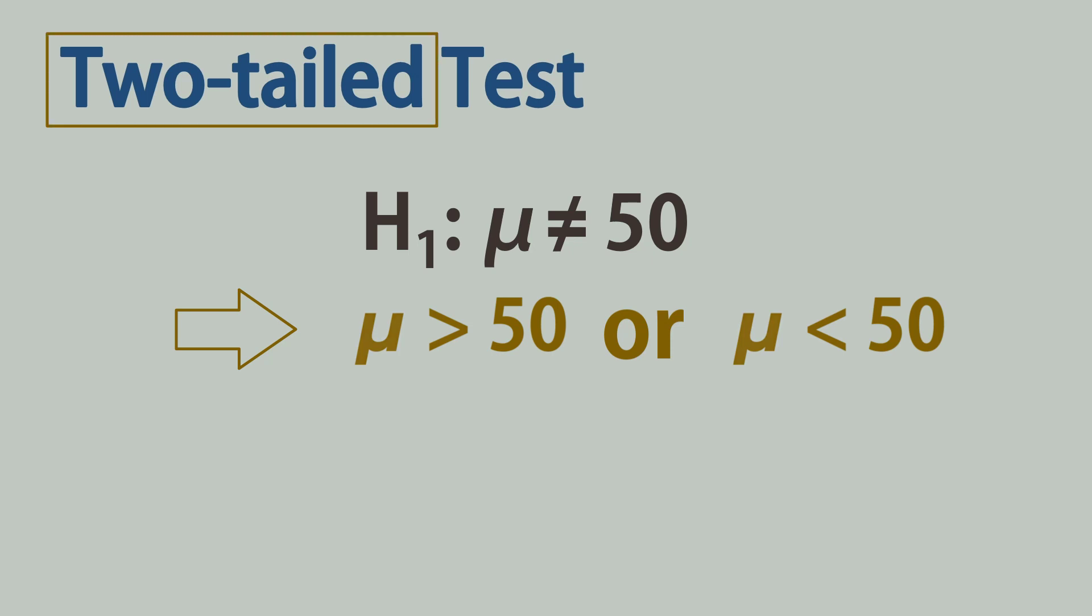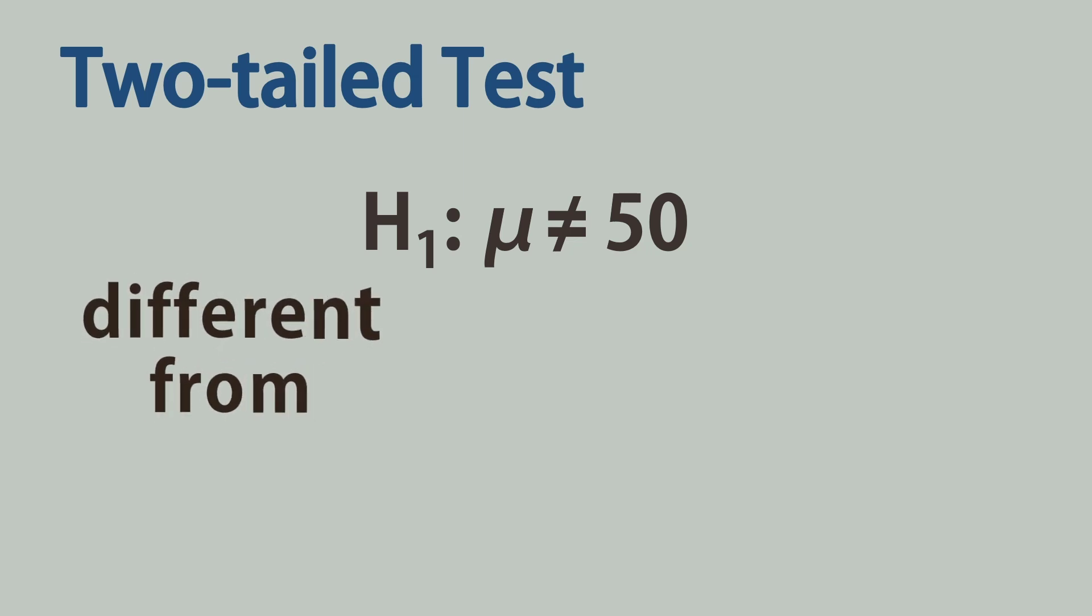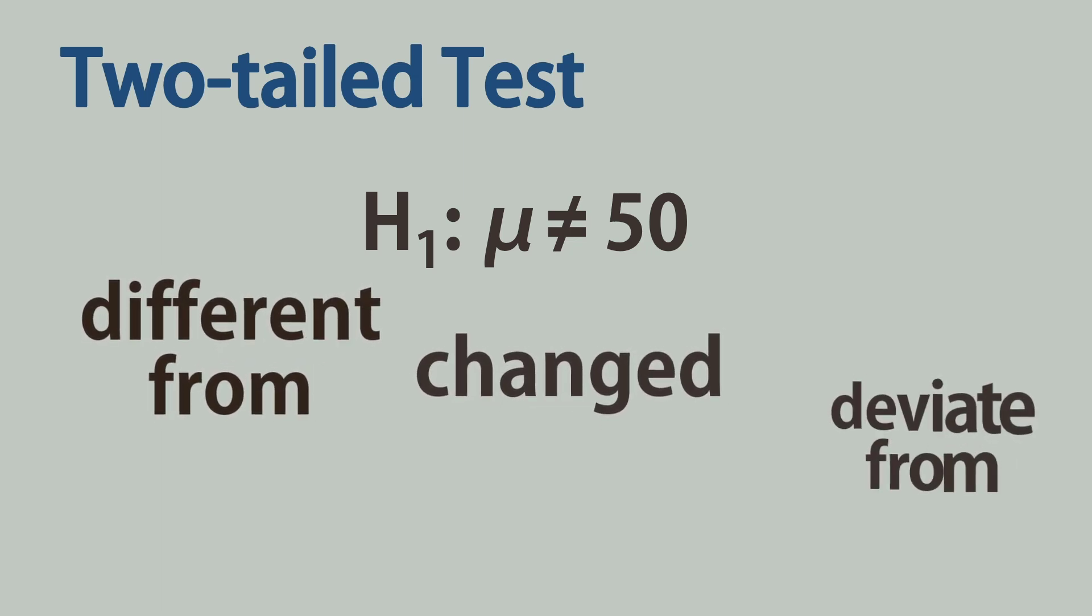Other keywords or phrases for the alternative hypothesis in two-tailed tests include different from, change, deviate from, inconsistent with, and so on.